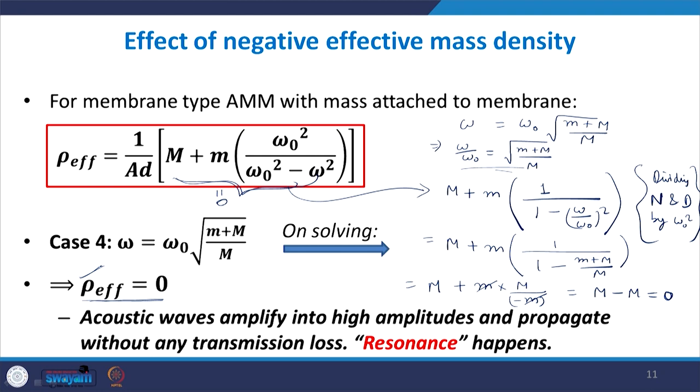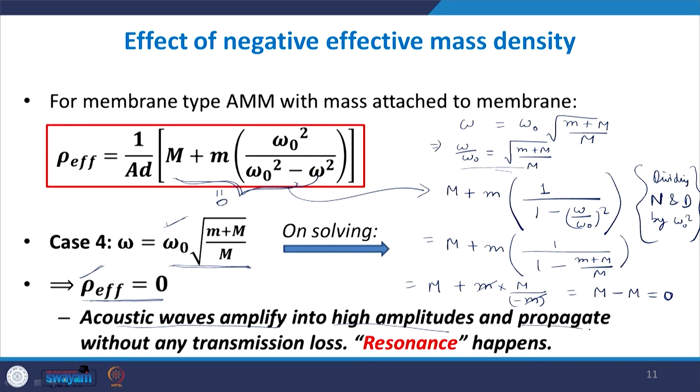When rho_effective = 0, the material behaves as if it has no density — almost like an air medium offering no resistance. The particles can accelerate at even the smallest excitation, waves amplify into large amplitudes, and they propagate without any transmission loss. This is resonance: heavy transmission occurs at this particular frequency.